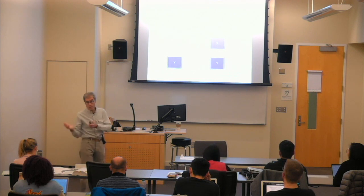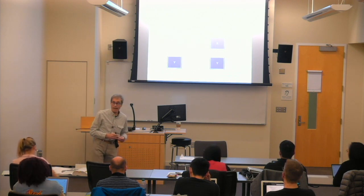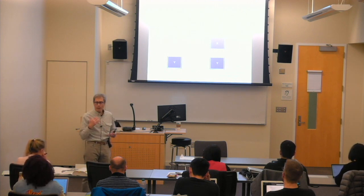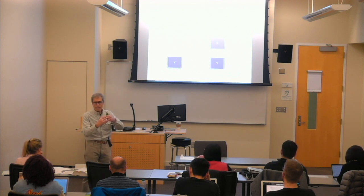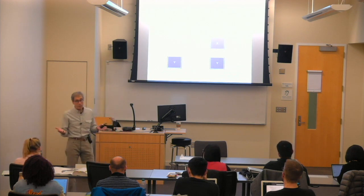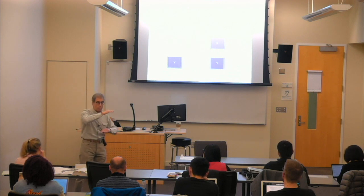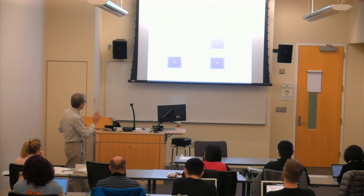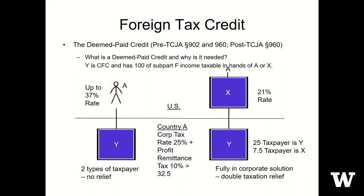So the individual is not getting any direct foreign tax credit benefit from taxes paid by Y. On the other hand, X — the corporate shareholder of Y — can get the foreign tax credit benefit. The taxes that X pays are direct taxes. The taxes that Y paid, with respect to X's claim of a foreign tax credit, are indirect credits — and this is the subject of the deemed paid credit.